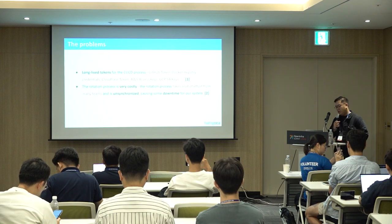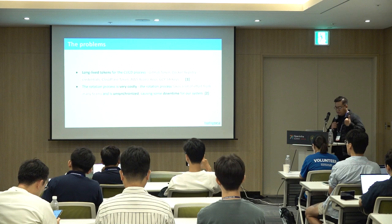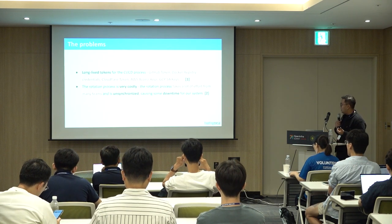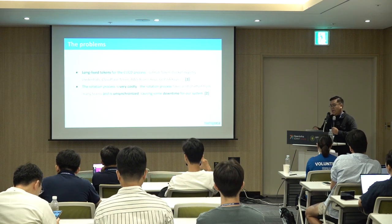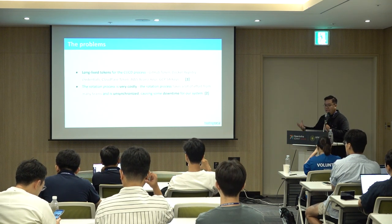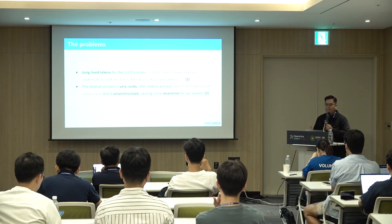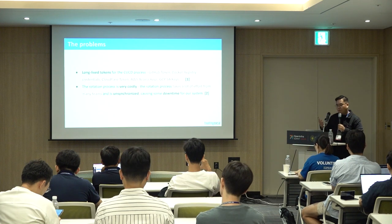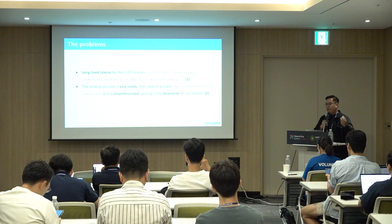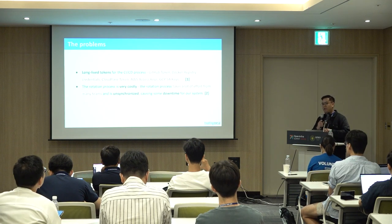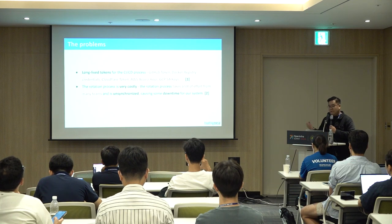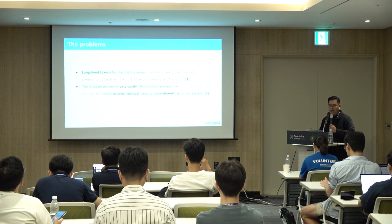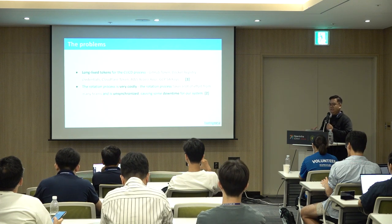Long-lived tokens in the CI/CD process — for example GitHub tokens, AWS credentials — are connected to our infrastructure, so it's very important. And the process of rotation is very costly. For example, if you have four projects and different AWS accounts, you're not centralized; you have to create an IAM user per account. When you have to rotate, it takes many steps — you have to do it every 90 days — and it may cause downtime because we set the expiry time of the token but aren't aware of exactly when it expires.